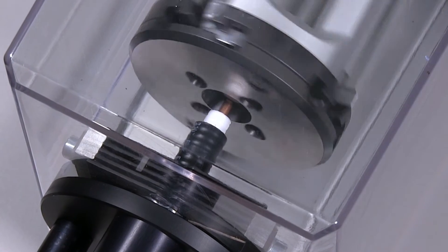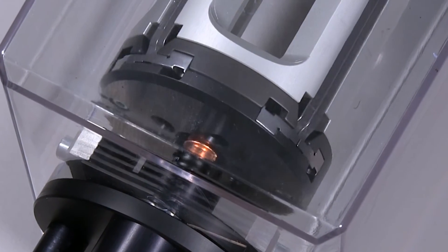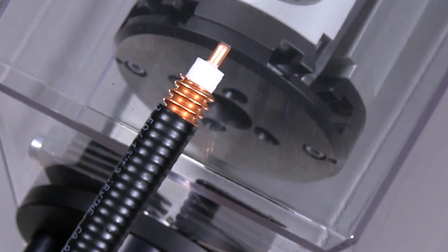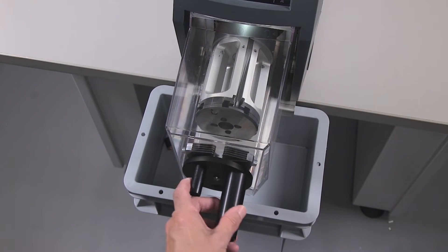By making incisions that are linear and perpendicular to the cable axis, the Coax Strip 6580 ensures clean, precise incisions every time.